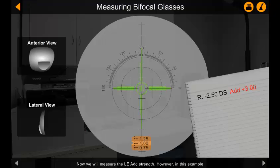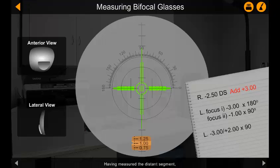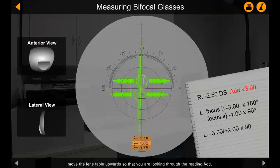Now we will measure the left eye add strength. However, in this example, the left eye lens contains a cylinder and will require a slightly different approach. Having measured the distance segment, move the lens table upwards so that you are looking through the reading add. The add will appear as though it is a cylinder, but do not forget that it is a plus sphere on top of the distance segment.